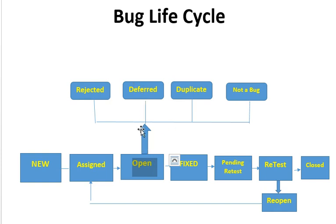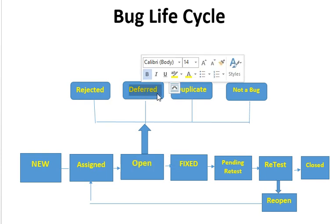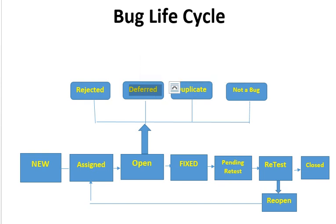One such state is Deferred. A bug moves to the Deferred state when it is to be fixed later. This state shows that the bug will be worked upon in the next or upcoming cycles. The reason for deferring the defect can be that the bug is low priority, it may be a low risk area, or there may be a release coming up so the defect will go as part of the next release.